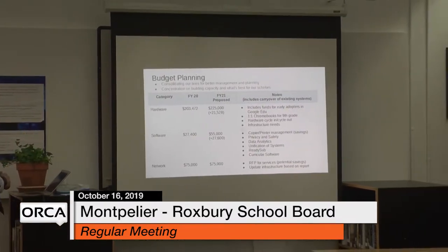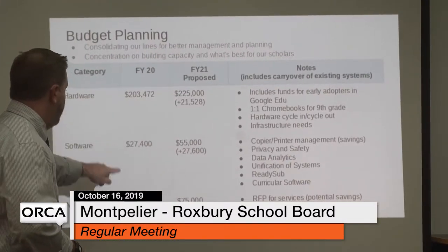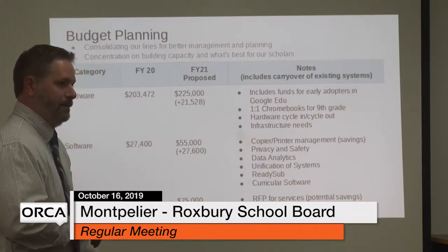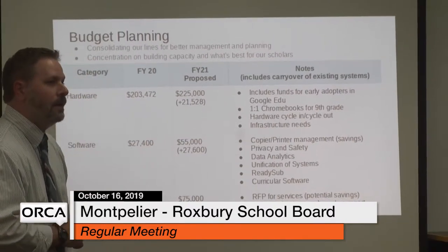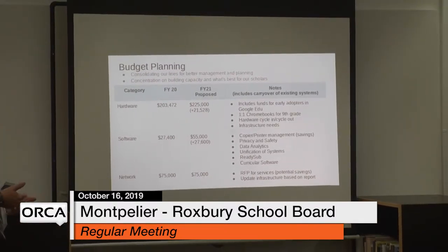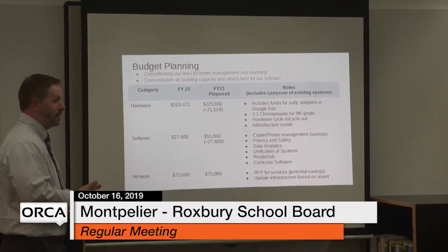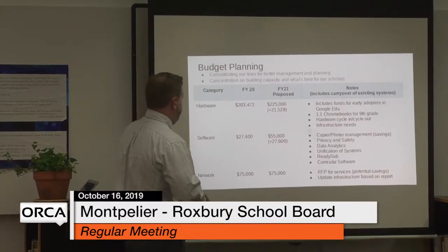Looking at last year's numbers for hardware, software, and network engineer support: in the current budget those are spread across about 18 to 20 individual lines. Next year we're hoping to consolidate into just three big lines at a district level. One of the challenges with 18 individual lines is it's really hard to track spending, see impact, coordinate processes, and make savings on bulk ordering.